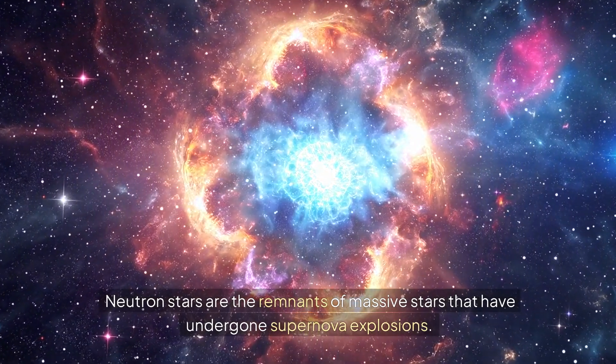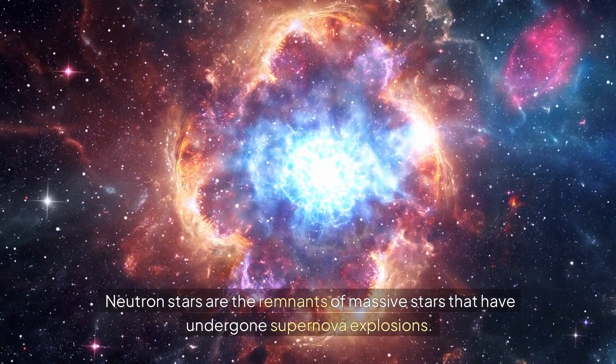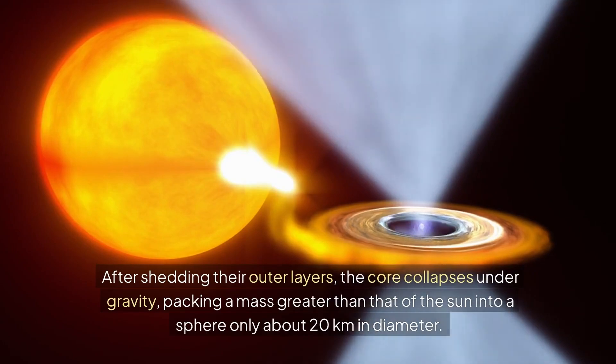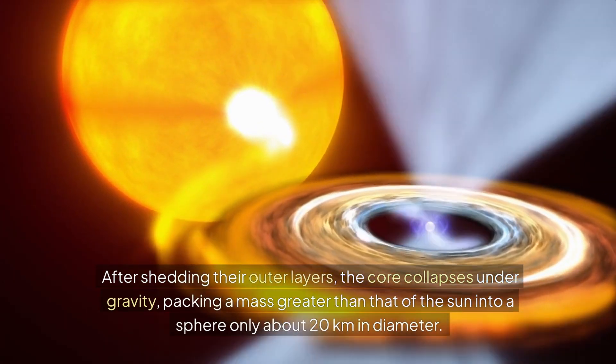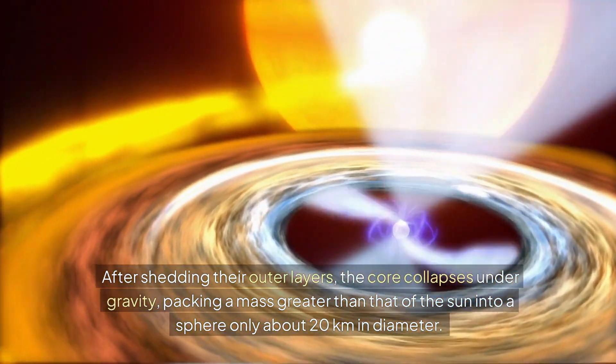Neutron stars are the remnants of massive stars that have undergone supernova explosions. After shedding their outer layers, the core collapses under gravity, packing a mass greater than that of the Sun into a sphere only about 20 kilometers in diameter.